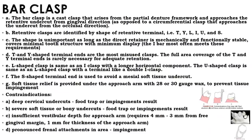Bar clasp is a cast clasp that arises from the partial denture framework and approaches the retentive undercut from the gingival direction — opposite to cast circumferential, which approaches from the occlusal direction. The retentive clasps are identified by the shape of the retentive terminal: T, Y, L, I, U, and S. The I-bar most often meets requirements as it covers minimal tooth structure with minimal display.